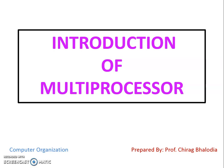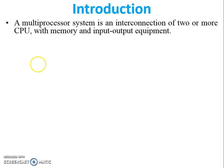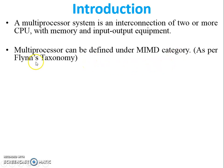Hello friends, myself Chirak. Today I'm going to teach you the introduction of multiprocessor, a topic of computer organization and architecture. A multiprocessor system is an interconnection of two or more CPUs with connected memory and input/output devices. As per Flynn's taxonomy, there are four categories: SISD, SIMD, MISD, and MIMD.